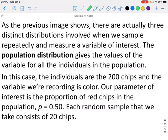As the previous image shows, there are actually three distinct distributions involved when we sample repeatedly and measure a variable of interest. The population distribution gives the values of the variable for all the individuals in the population. That was the 50% blue, 50% red. In this case, the individuals are 200 chips, 100 of them were red and 100 were blue. A parameter of interest would be p equals 50%.